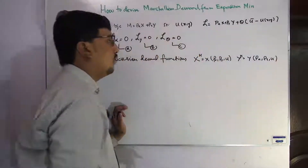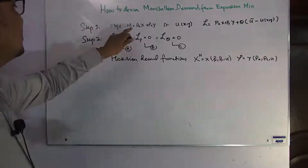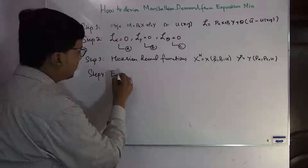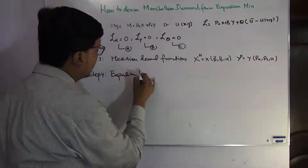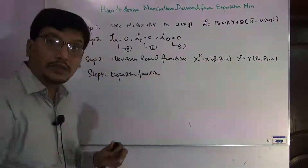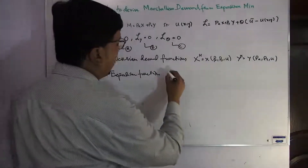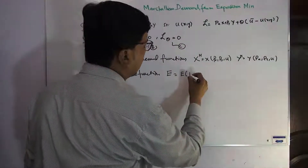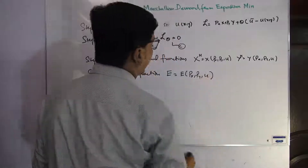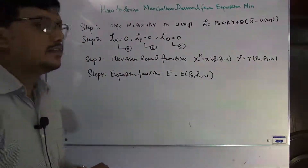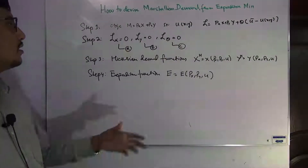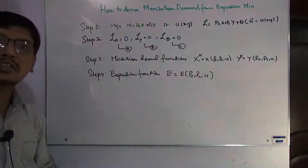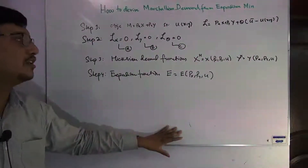Now in step number four, we take these Hicksian demand functions and plug them into the objective function. We will get the expenditure function. The expenditure function: the M sign is changed to E, and the expenditure function is also a function of price of X, price of Y, and utility U, written as E(Px, Py, U). These four steps have been discussed in detail in previous lectures.